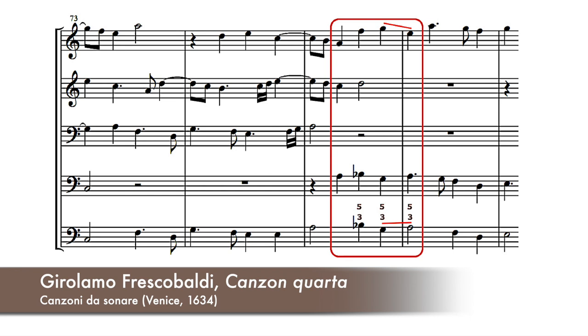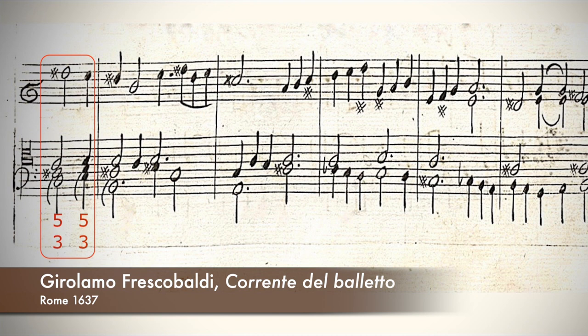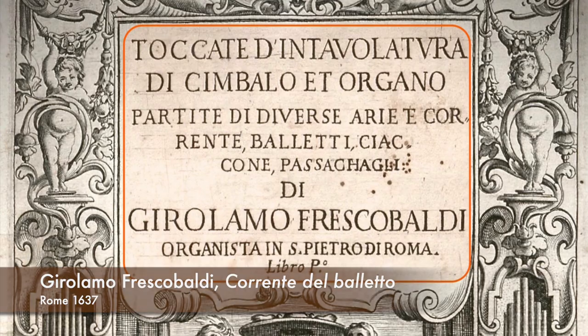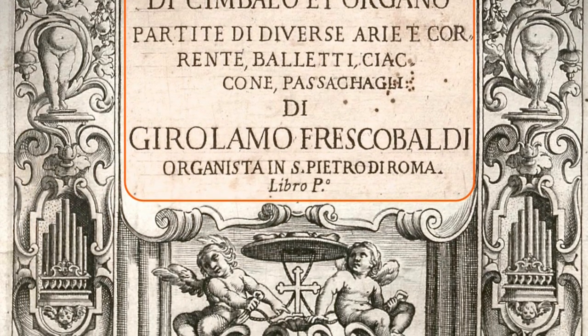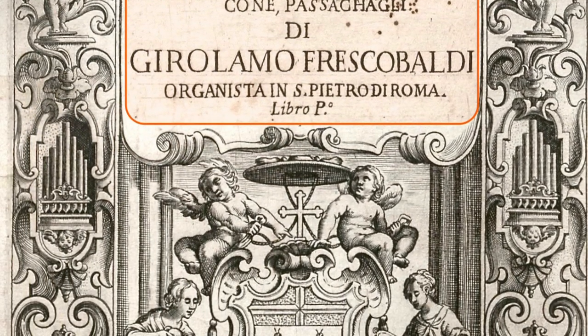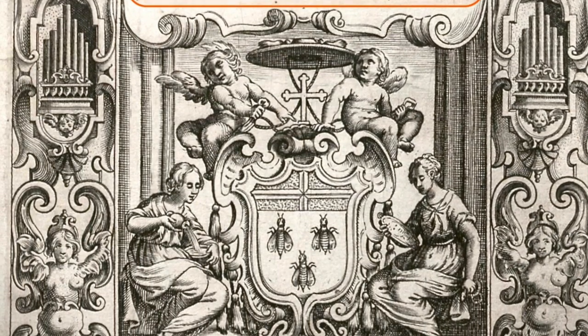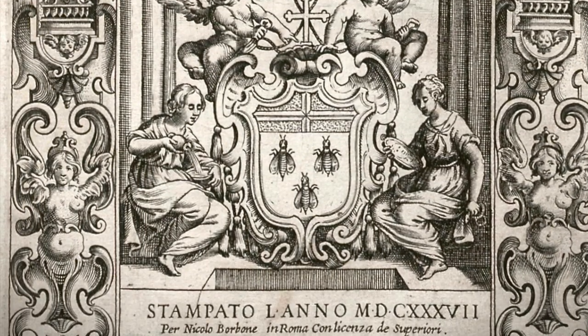Even stepwise progressions may have successive fifths. Many composers in this period were not afraid to use such parallel fifths in keyboard music, as we see for example in Frescobaldi's Corrente del Balletto. They were not considered problematic as long as the upper part was still in contrary motion with the bass. One would expect it to be easy to find confirmation of this rule about the use of 5-3 chords in Frescobaldi's solo works for keyboard, but it is actually quite difficult to find straightforward chordal passages in these works because of the complexity of his compositional techniques.